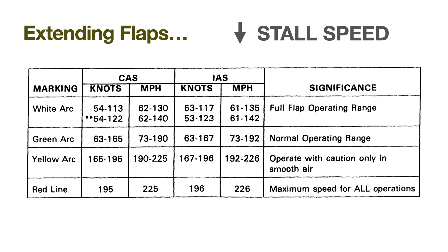Extending flaps also lowers stall speed. Here is the chart for my Beechcraft Bonanza — extending flaps lowers the stall speed from 63 knots to 54 knots. Anything that helps us fly more slowly will help us land in a more confined area. The landing distance as well as the energy to be dissipated on landing are functions of speed squared, so touching down at 54 knots instead of 63 knots represents a 27% decrease in landing distance.